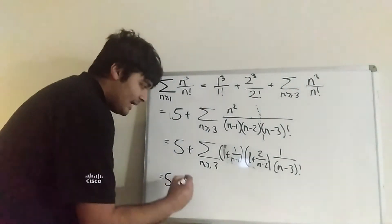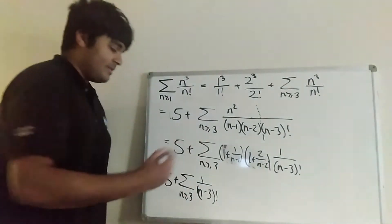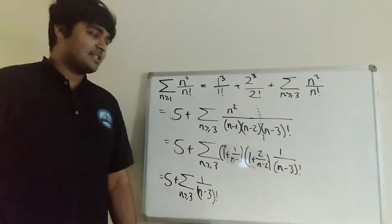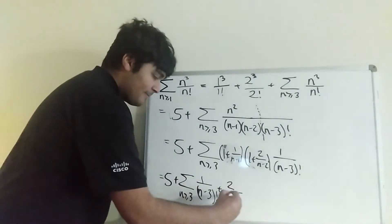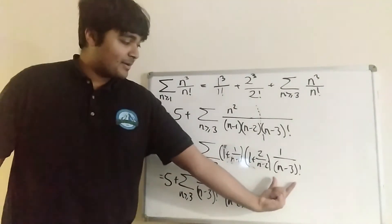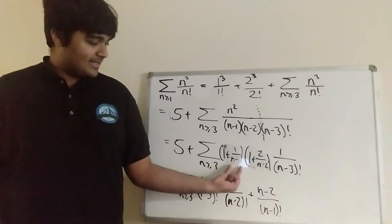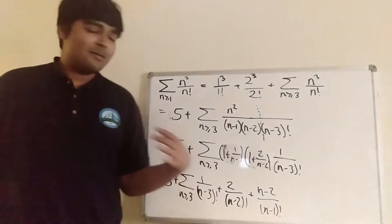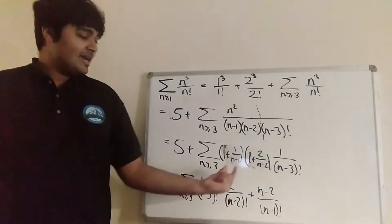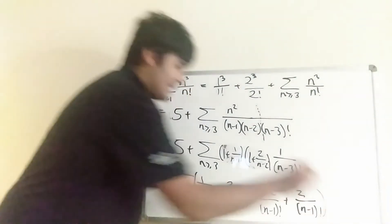This is equal to 5 plus the sum from n being bigger than or equal to 3. The 1 times 1 times 1 over n minus 3 factorial gives us 1 over n minus 3 factorial. This 1 times 2 over n minus 2 times 1 over n minus 3 factorial gives us 2 over n minus 2 factorial. The 1 over n minus 1 times 1 over n minus 3 factorial gives n minus 2 all over n minus 1 factorial — because this n minus 1 on the bottom almost makes an n minus 1 factorial, but we're missing a factor of n minus 2, so we multiply top and bottom by n minus 2. And then 1 over n minus 1 times 2 over n minus 2 times 1 over n minus 3 factorial gives plus 2 over n minus 1 factorial.